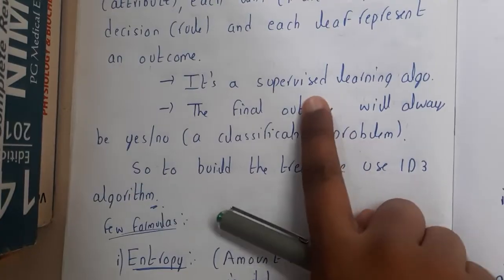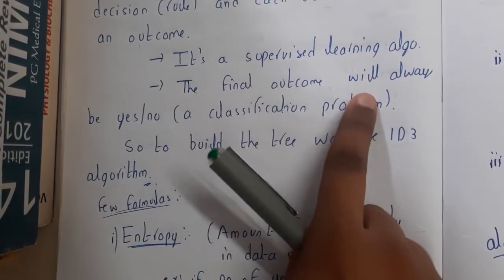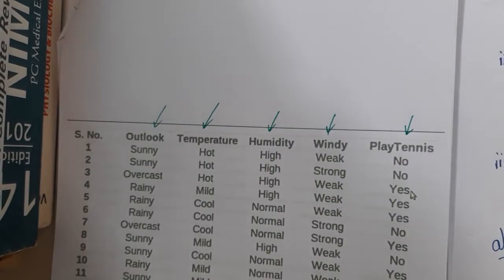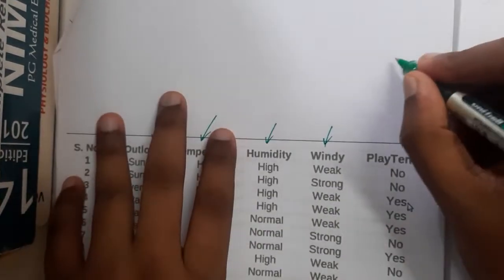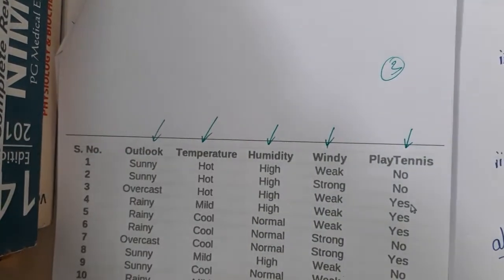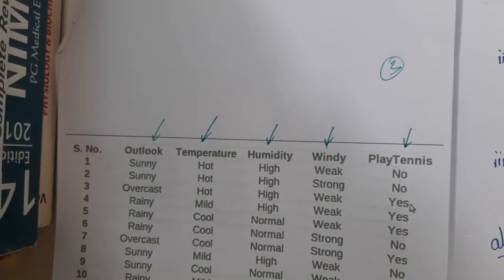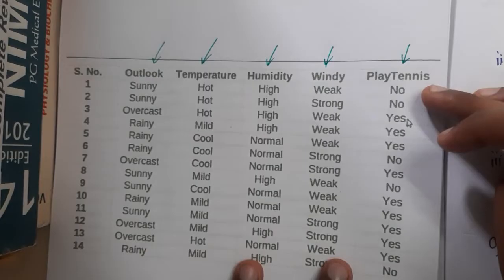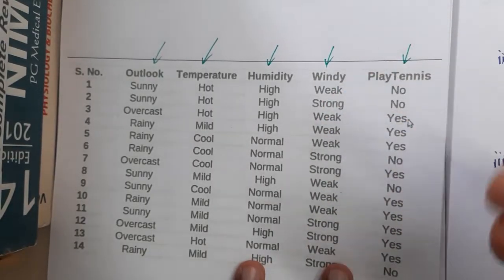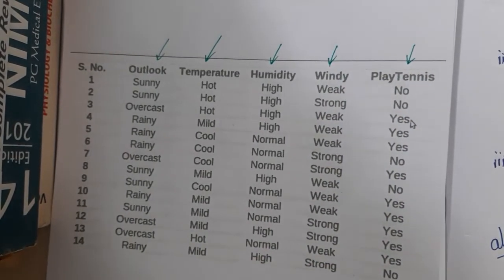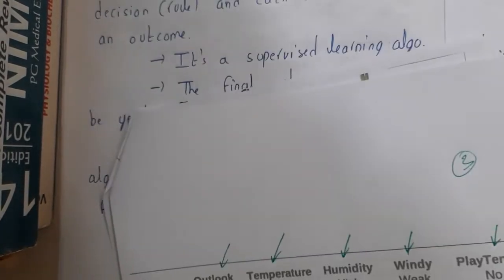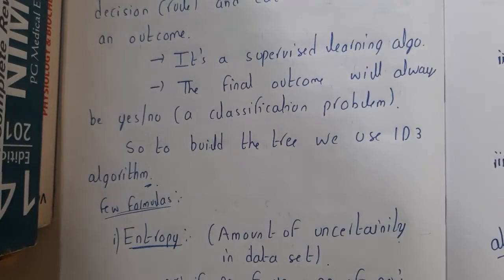Decision tree is a supervised learning algorithm. The final outcome will always be yes or no. Basically, the result should be yes or no at the end. In some examinations, they may give you three parameters, making it more complex — you need to check for yes, no, and moderate. As the parameters increase, it becomes more and more complex. Everything is directly proportional to complexity.